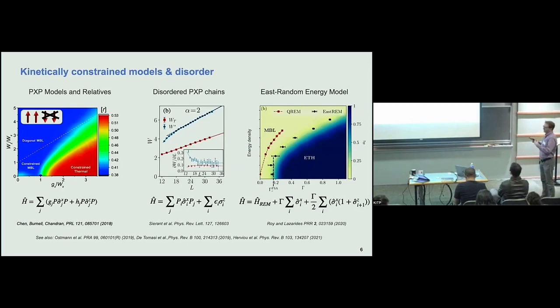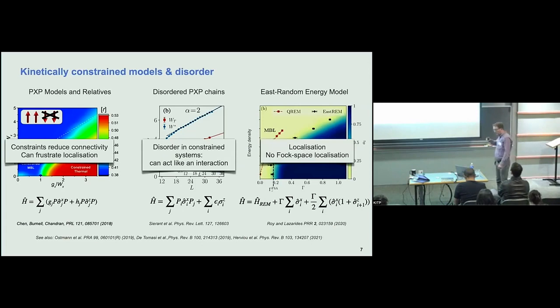So here's a similar model from the Krakow group. They put out a relatively demanding numerical study and looked at the scaling of the critical disorder. And what they find is actually bad news for localization physics, again, similar to the standard model of MBL, spinless fermions with interactions. This actually appears to scale linearly and there's no indication that there is actually a localization transition in the thermodynamic limit.